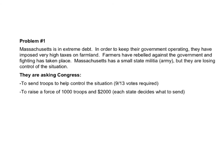For example, problem 1 is loosely based on Shays' Rebellion. Massachusetts is dealing with a rebellion and is asking Congress to help by sending troops — requesting 1,000 troops and $2,000. I explain to students that there are two decisions to be made: first, as a Congress, we need to agree to send troops, requiring 9 out of 13 votes. Once we've done that, we actually have to raise the troops, so each state has to be willing to contribute some of their troops and money.